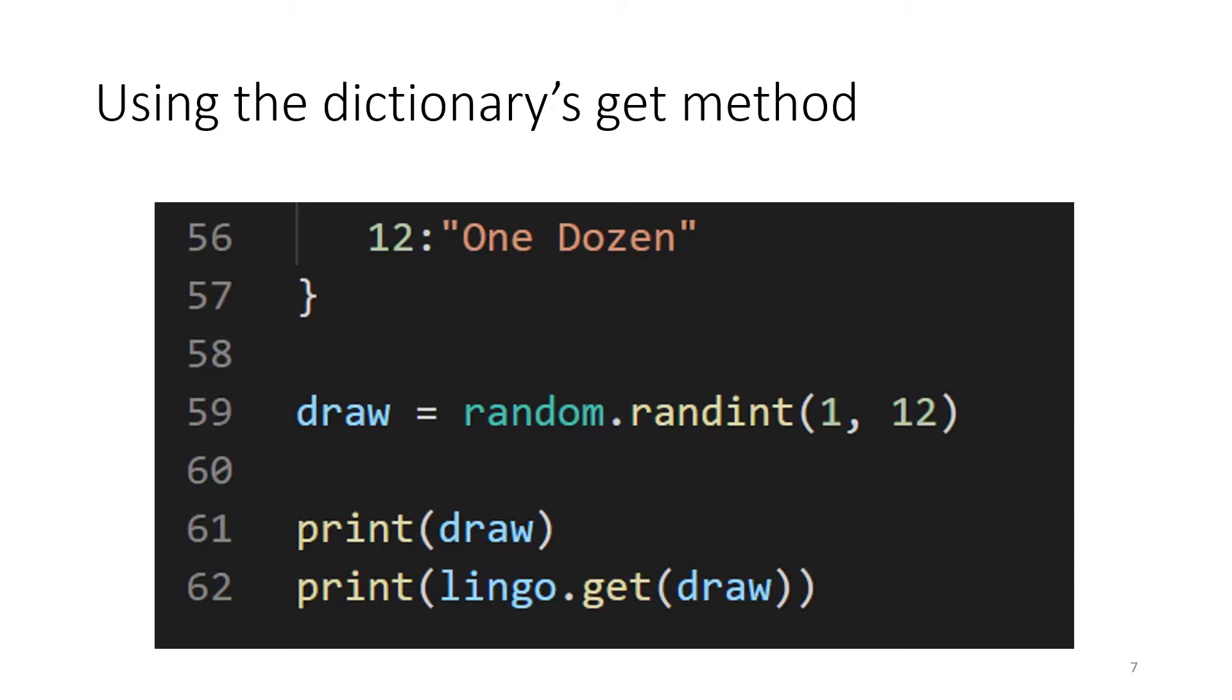So we have that closing curly bracket that you see in line 57. That's the close of the dictionary. And we see in line 56 our last key-value pair. That value is 'One Dozen'. The key is 12. So if you were to roll a 12, you would get the value of 'One Dozen'.